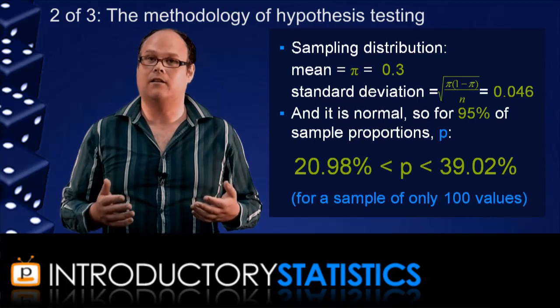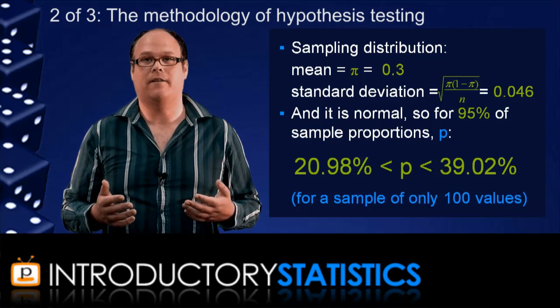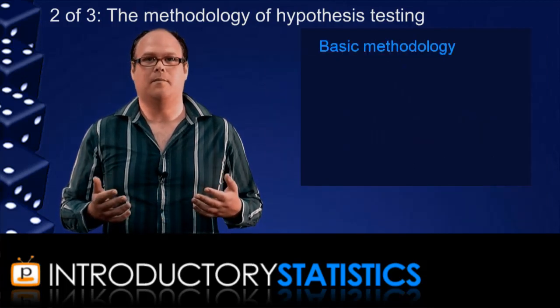That is, we'll reject the null hypothesis. On the other hand, if the sample proportion is in that range, we won't reject the null hypothesis. So that is where the method for testing comes from.